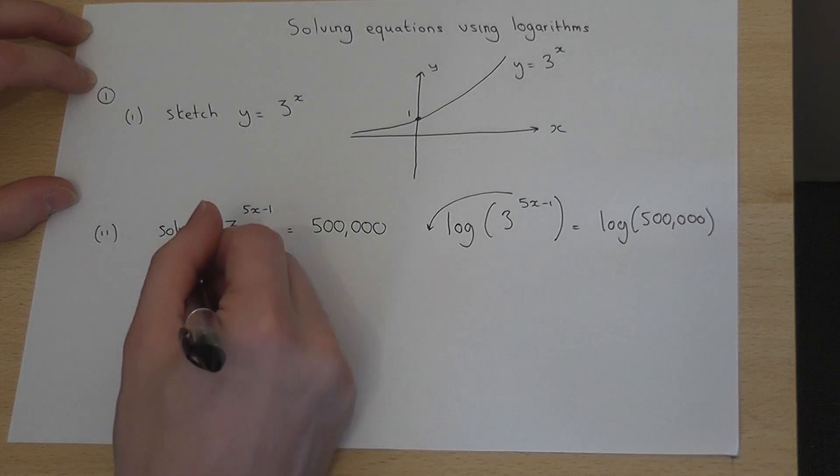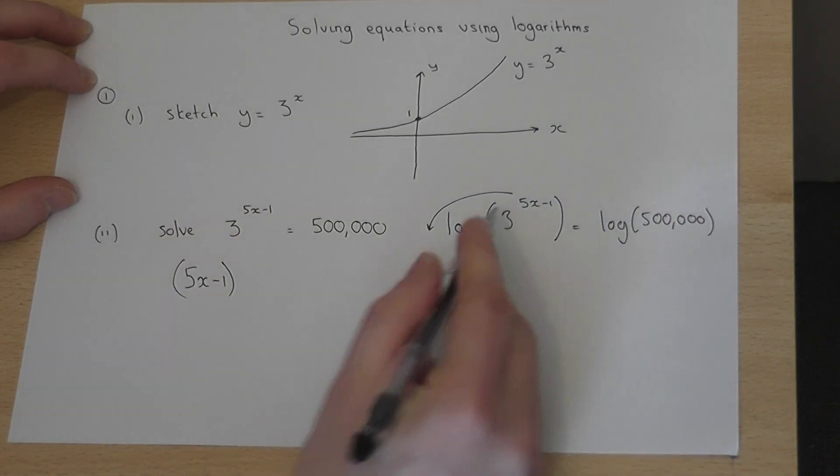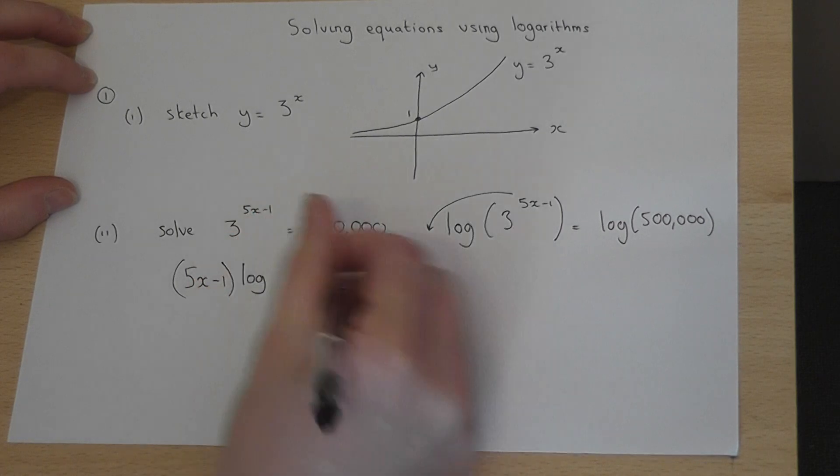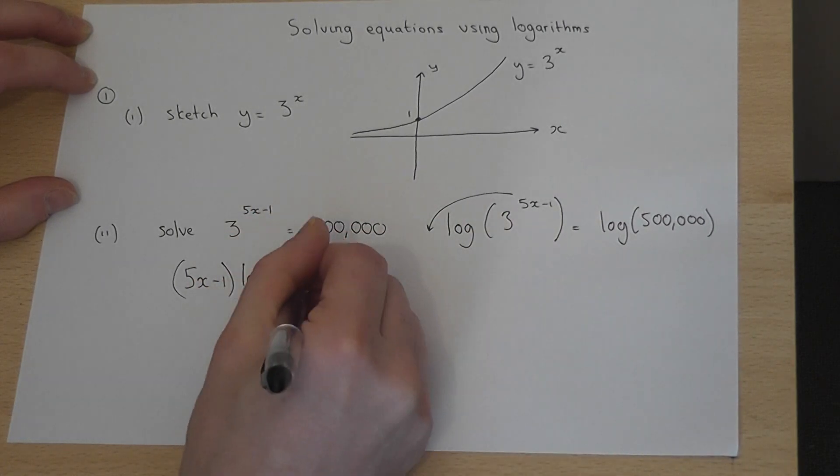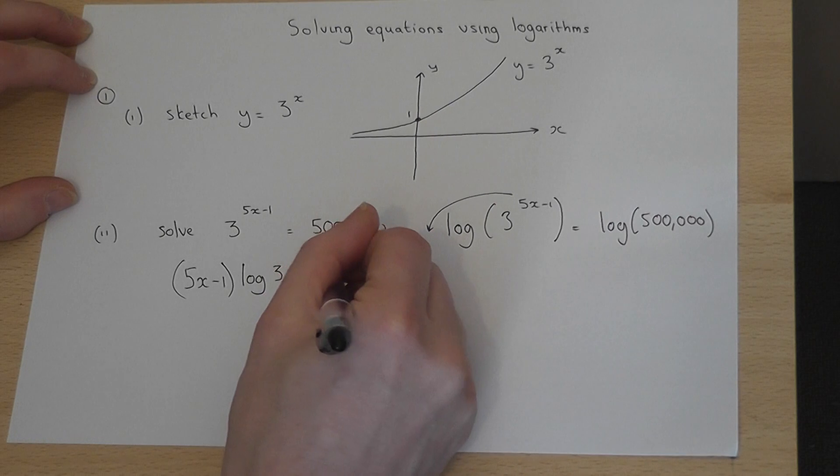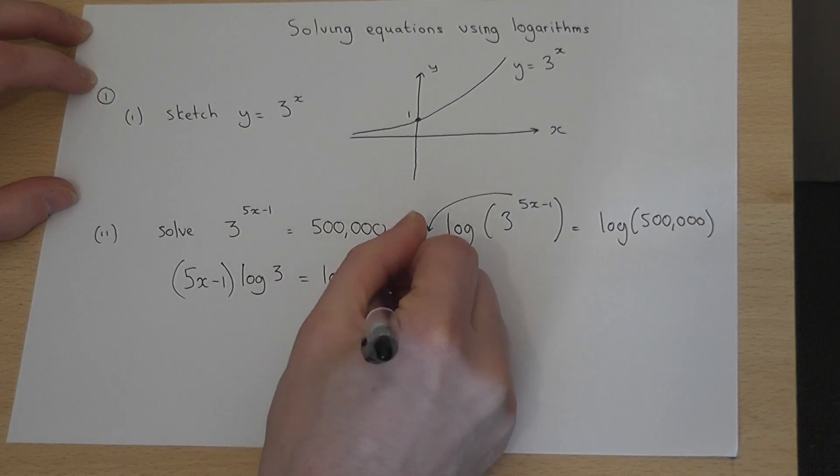So this equation becomes 5x minus 1 in brackets, log with the base, log 3. And that will equal log of 500,000.